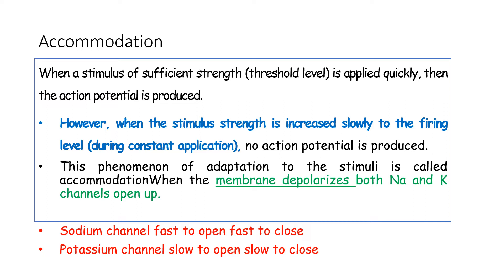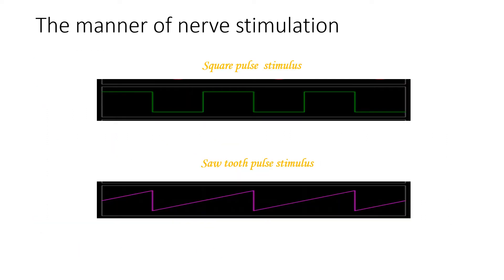If the stimulus rises slowly, the sodium channels — which are fast to open and fast to close — will have fewer available channels to cause sodium influx. More potassium channels will open, resulting in a repolarization current, and therefore no firing of the action potential. The square pulse stimulus causes the phenomenon of accommodation, whereas the saw-tooth pulse stimulus produces a quick action potential response due to greater opening of the sodium channels.